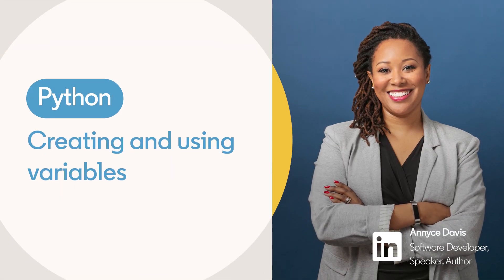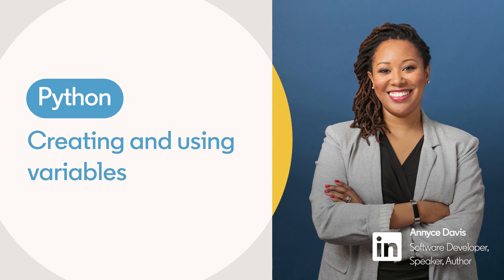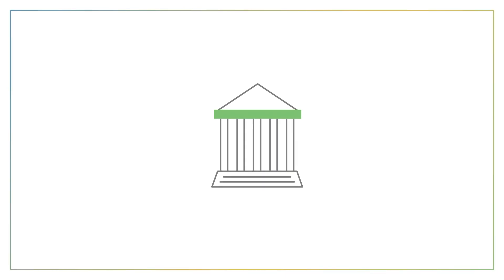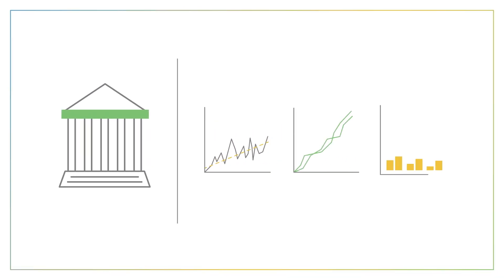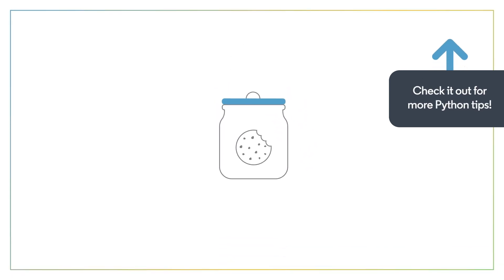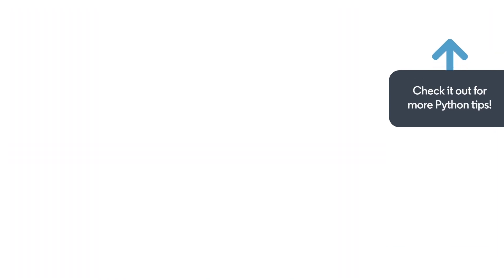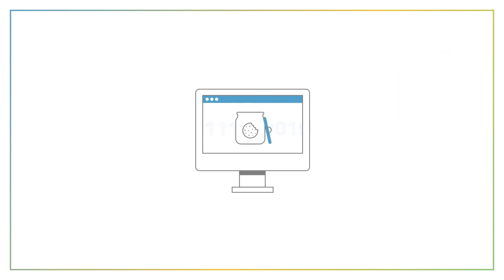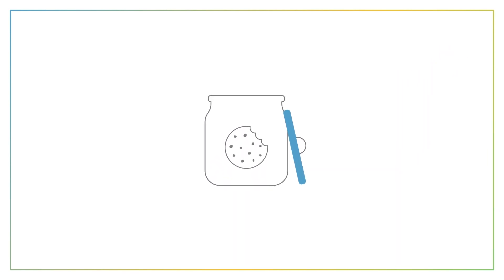Writing code typically involves the handling of information. If we're making a game, we need to store the user's score. If we're creating a banking application, we'll need to have their current balance, and so forth. A variable is simply a container for a value. When we run our programs, the computer gives us space in its memory where we can put data that we want to use as a reference for later. This data is called a variable.